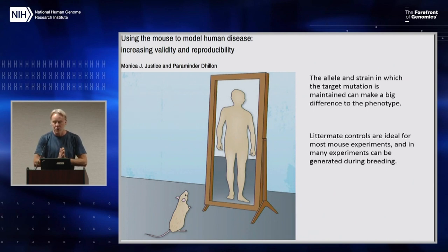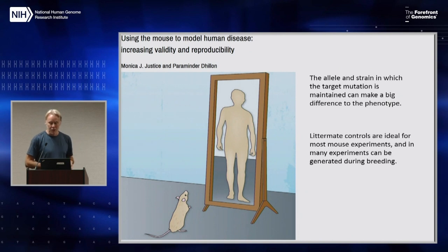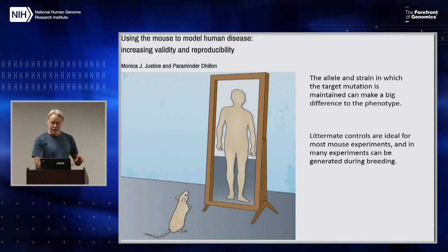One is that the allele and the strain in which the target mutation — and we'll address alleles in a minute — in which a target mutation is maintained can make a big difference to the phenotype. And as a minor point, but one that's going to play into my hand here: littermate controls are ideal.